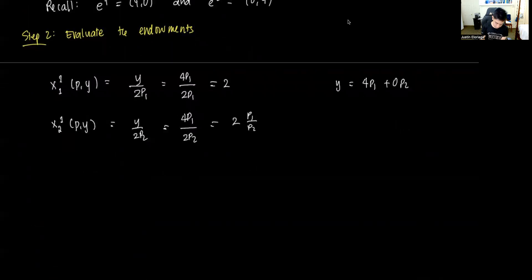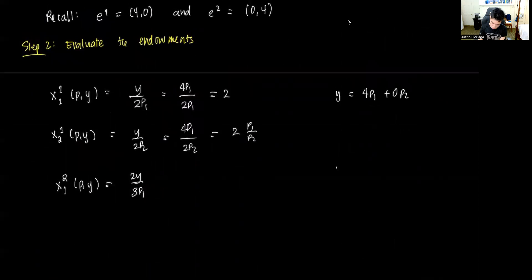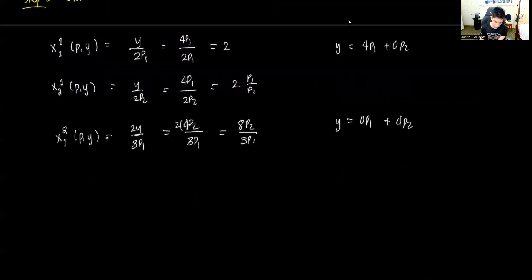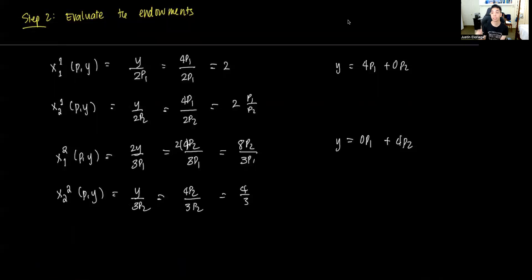For consumer two, x1₂*(P,y) = 2y/(3P1). Since endowment is (0, 4), income y = 0·P1 + 4P2 = 4P2. So x1₂* = 2·(4P2) / (3P1) = 8P2 / (3P1). For x2₂*(P,y) = y/(3P2), we get 4P2 / (3P2) = 4/3. We now have all four demanded quantities in terms of prices.